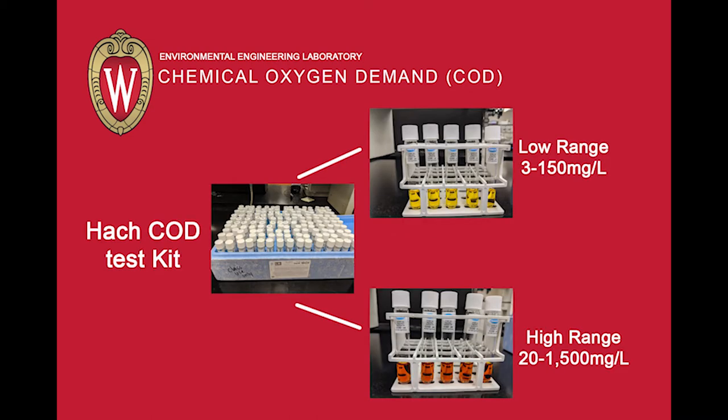Supplies needed for the chemical oxygen demand, or COD, procedure include a test kit from Hach plus a tube rack. You can choose either the low range kit, which has a range from 3 to 150 mg per liter COD, or the high range kit, which has a range of 20 to 1500 mg per liter COD. The liquid in the tube contains concentrated sulfuric acid, mercury, silver sulfate, and potassium dichromate.